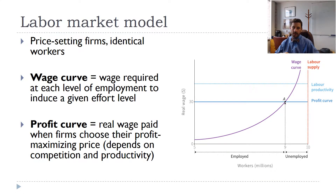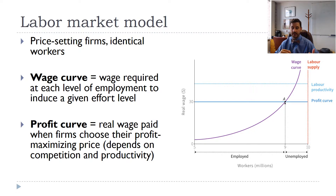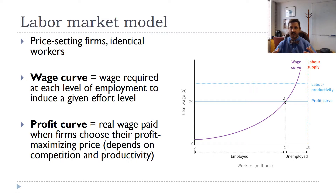Here we're going to talk about the labor market model and why we don't use just a supply and demand model like a lot of economics textbooks do. In the labor market, workers supply labor and firms demand labor, so we could just use supply and demand and talk about a market clearing wage and a market clearing level of employment. But the model introduced in chapter six was all about paying workers more than you have to in order to get a higher level of effort. In that case, there's always going to be some people who would like to have jobs but do not have jobs — what the book refers to as involuntarily unemployed.